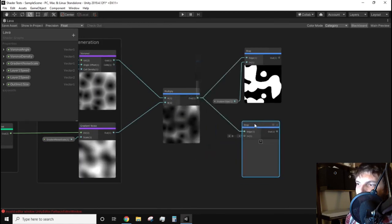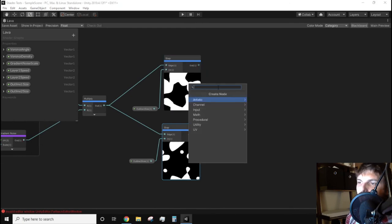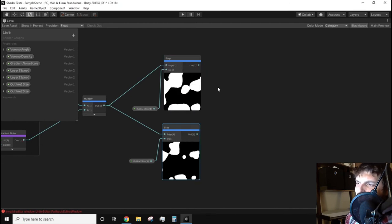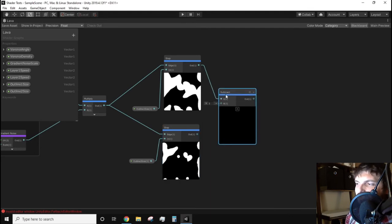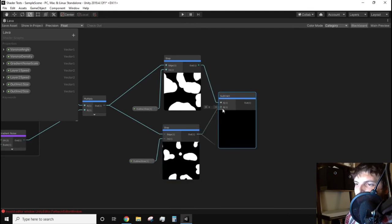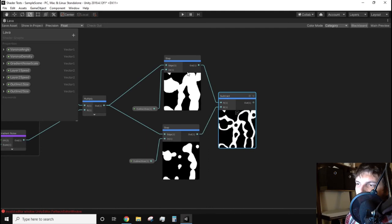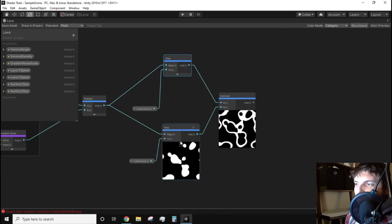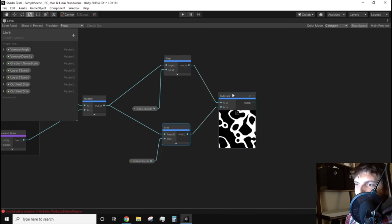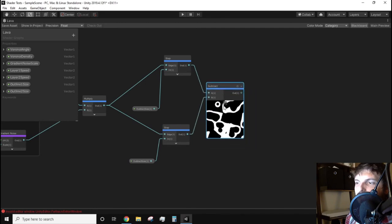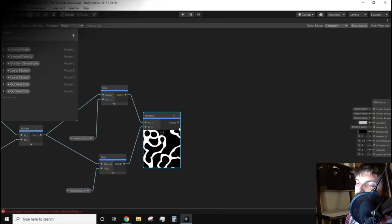We need to subtract the smaller step shape from the larger step shape. This is achieved by the subtract node. This does exactly what it says and it subtracts the two given inputs. Plug the larger step into slot A of the subtract node and then the smaller step shape into the B slot. The preview should show an outline effect.